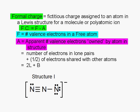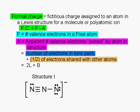A is the apparent number of valence electrons owned by the atom in the structure. For purposes of calculating formal charge, we assume that an atom owns all of the electrons in its lone pairs, and half of the electrons that it is sharing with other atoms. In other words, if an atom has L lone pairs and B bonding pairs, then the number of valence electrons that it appears to own is 2L plus B.